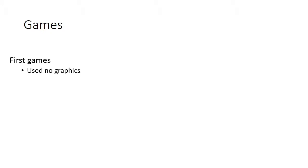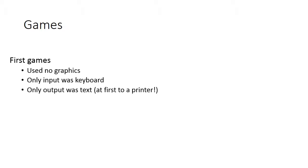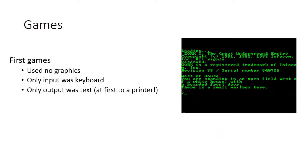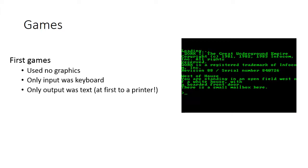Early games were really terrible — no graphics, no pictures. The only way to get input was the keyboard; you would type something in, the computer would print something out. Here's an early one — Zork 1. You'd see: 'You are west of the house, standing in an open field, there is a small mailbox here.' You would type 'open mailbox' and it would come back saying 'you've opened the mailbox.' That was the interactivity. You had to use your imagination. As Sheldon on The Big Bang Theory said about Zork: it uses the world's greatest graphics processor — the mind.